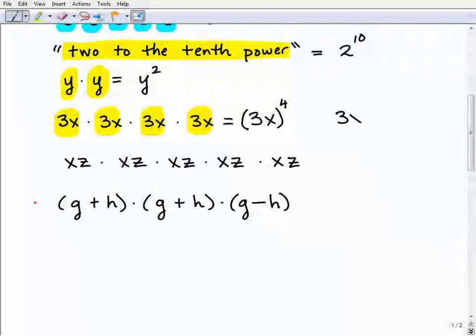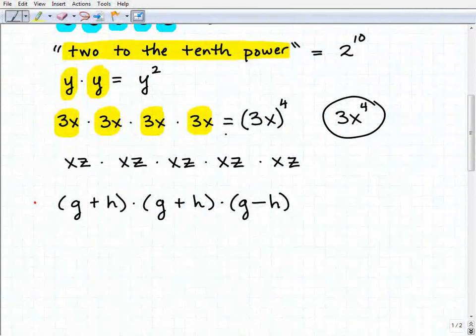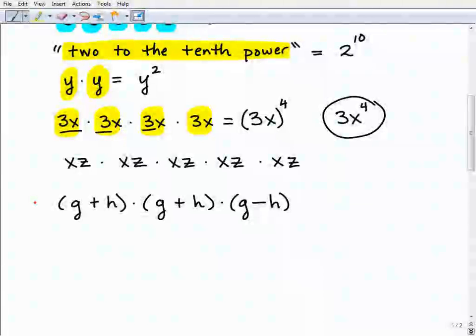Because here, 3X to the 4th, this is actually not technically correct. Okay, I'm not going to go into it right now. We'll get into that later on. So just know right now, when you have these variable terms, not one variable, when there's more than one variable, especially a number, you're going to put parentheses around it, just like this.